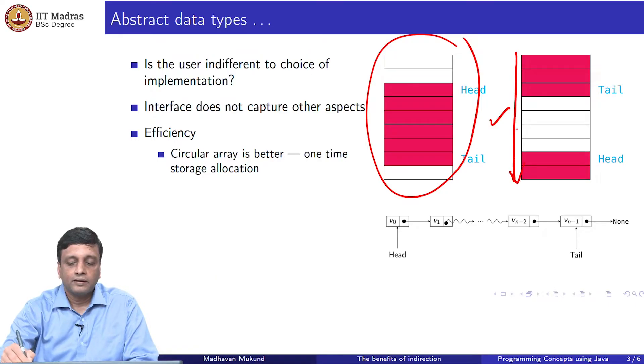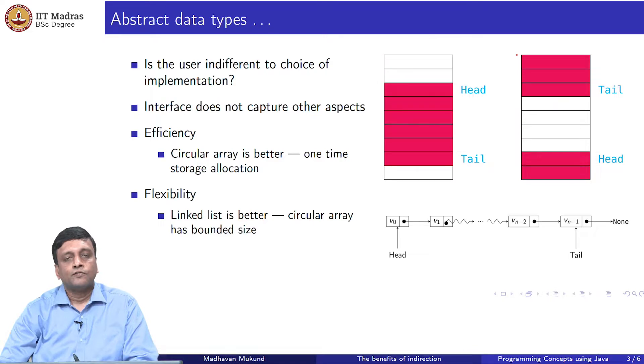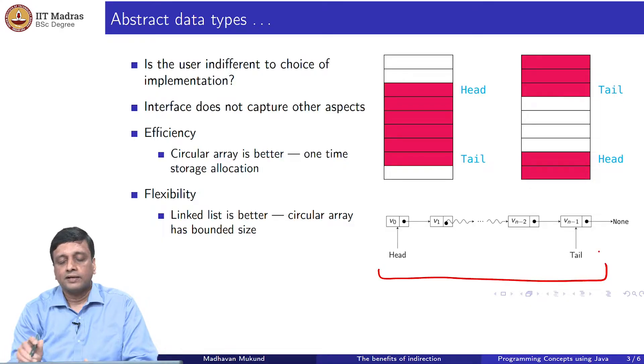However, notice that we are limited by the number of elements that we allocated to start with. If we want a flexible queue that can grow to any size, then the circular array is likely to run into problems because we run out of space in case the queue becomes very large. In such a situation, the linked list might be better. If we have no clear indication at the beginning of how large our queue might be, then we may prefer a linked list. Therefore, these two are not quite the same, even though from an interface perspective, they are identical, there are observable differences from the point of view of usability.